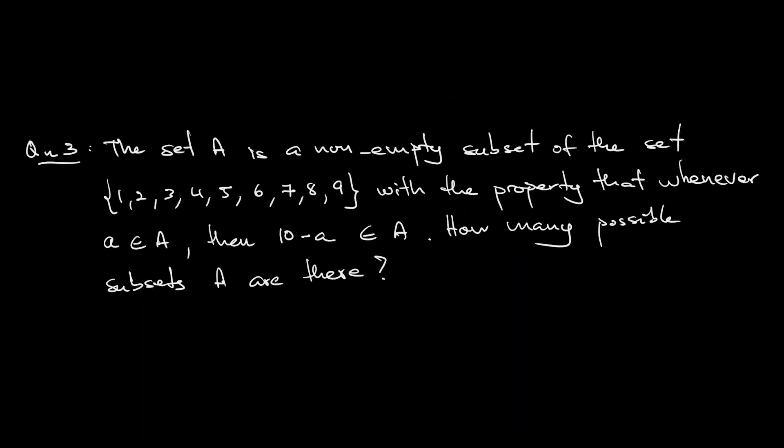Question 3. The set A is a non-empty subset of the universal set {1, 2, 3, …, 9}, with the property that whenever an element a belongs to A, then 10−a also belongs to A. The question asks: how many possible subsets A are there?